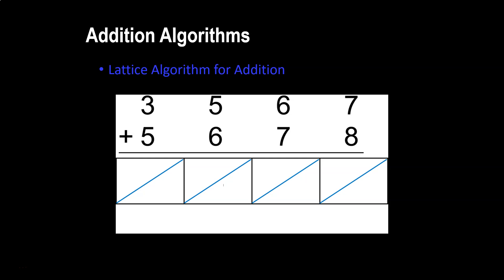I'm adding 3,567 plus 5,678. Underneath my addition problem, where I've stacked my numbers so the digits match up in each place value, I've drawn something we're calling a lattice.